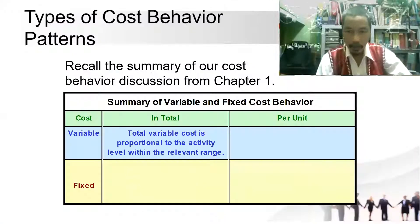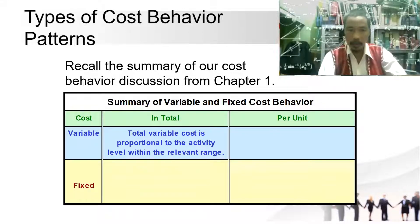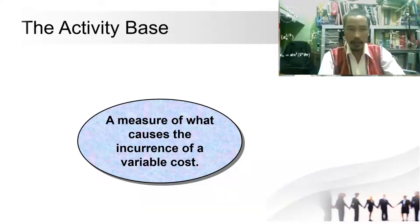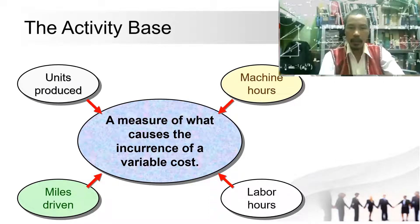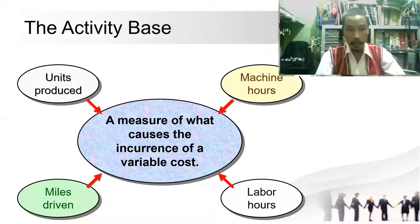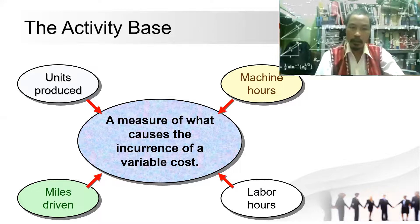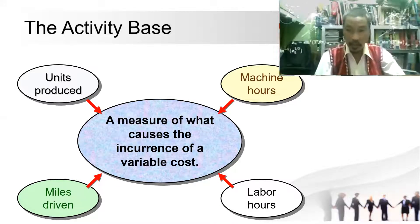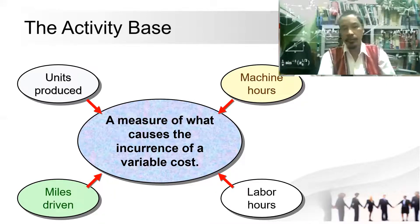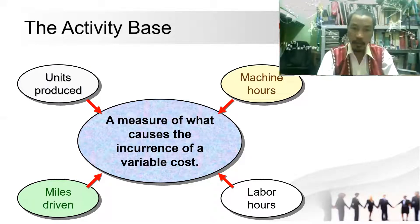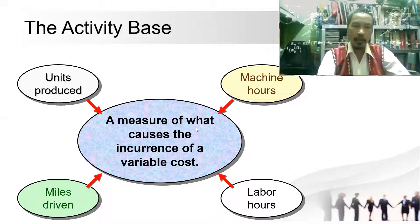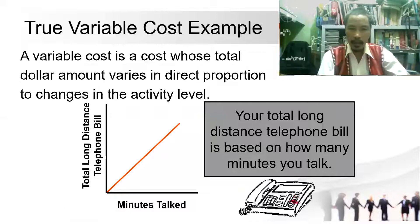We have a summary table comparing variable and fixed costs. For our activity base, we measure what causes cost to be incurred. Variable costs depend on units produced, machine hours, miles driven when transporting goods, or labor hours. A variable cost is a cost whose total dollar amount varies in direct proportion to changes in the activity level.